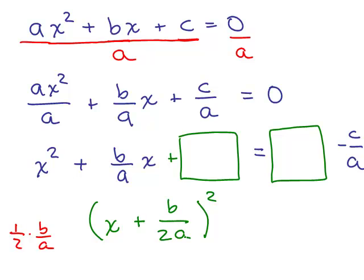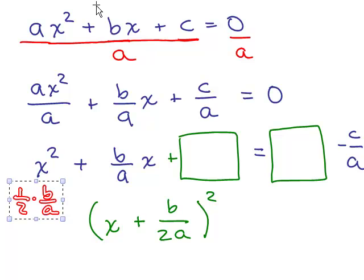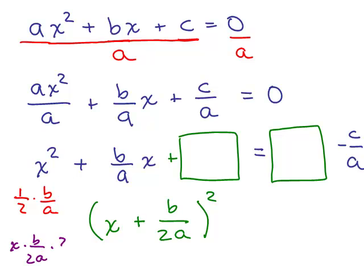Let's verify using the formula for squaring a binomial. We'd get x squared, then for the middle term it's x times b over 2a times 2 — the 2's cancel and we get b over a times x. That's correct for the middle term. The last term, what goes in the box, is the last term squared: b over 2a times b over 2a is b squared over 4a squared.